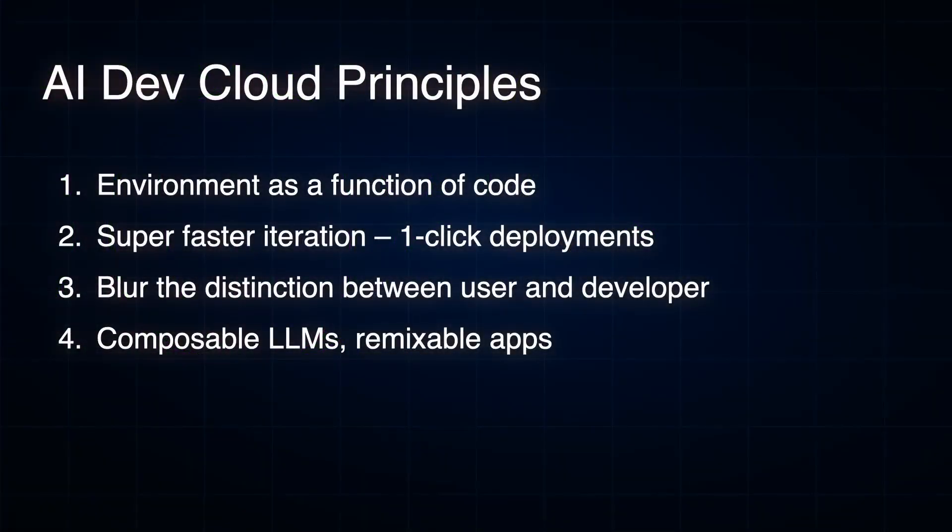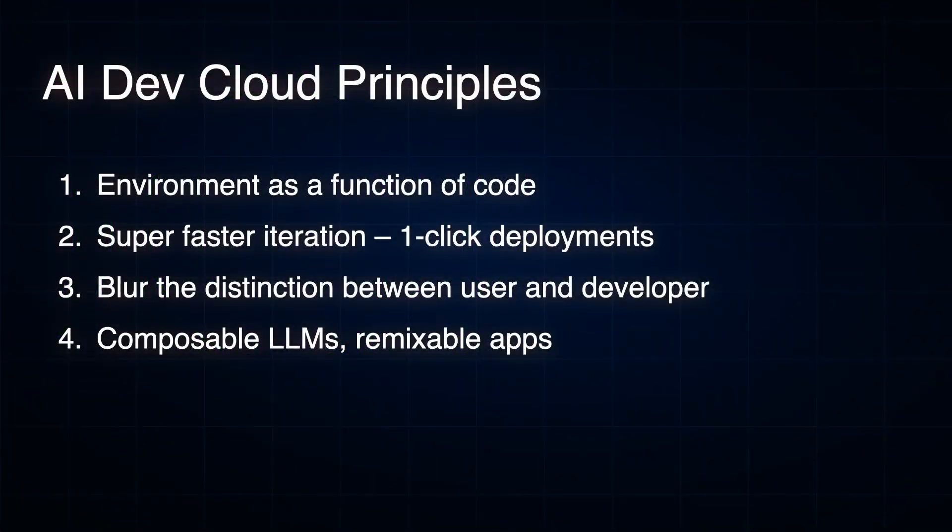The second principle is that iteration needs to be super fast. Because code is easier to generate, the thing that gets in your way is how do you deploy, how do you get feedback, how do you update that deploy? And there's this idea that the distinction between what is a user and what is a developer is changing. A lot of AI apps could be remixed, could be built upon, could be part of a pipeline. You can prompt a model in a way that other AI developers could use it, and the interaction between end user and developer starts blurring.